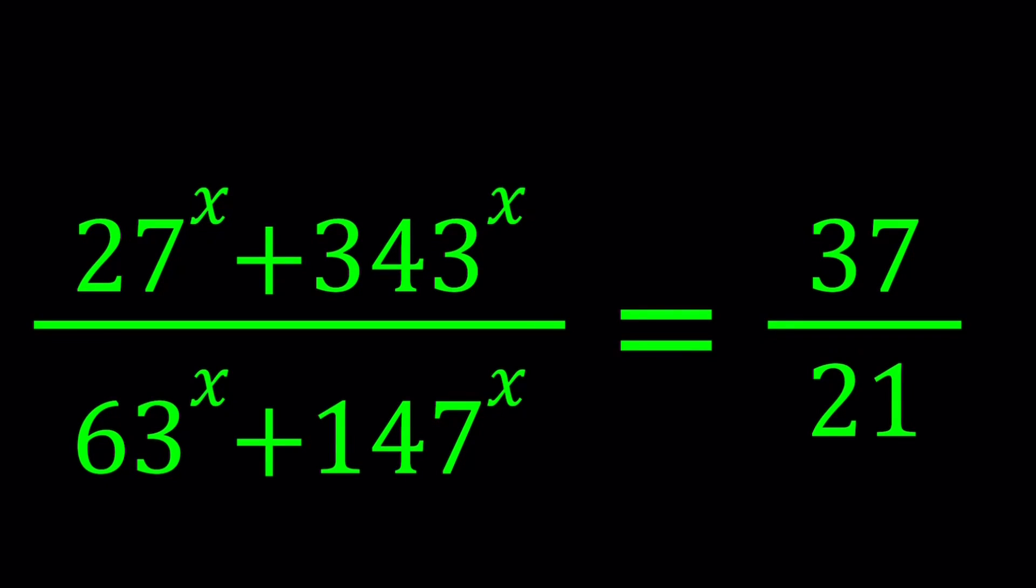Hello everyone, in this video we're going to be solving an exponential rational equation. We have 27^x + 343^x all over 63^x + 147^x, and that is equal to 37/21. We're going to be solving for x values.